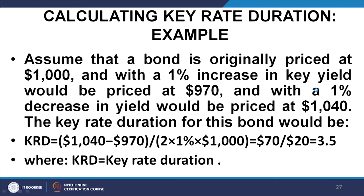Let us do an example. A bond is originally priced at $1,000. With a 1 percent increase in the key yield it would be priced at $970, and with a 1 percent decrease it would be priced at $1,040. The key rate duration is calculated as (1040 − 970) / (1000 × 0.02) = 70 / 20 = 3.5 years.